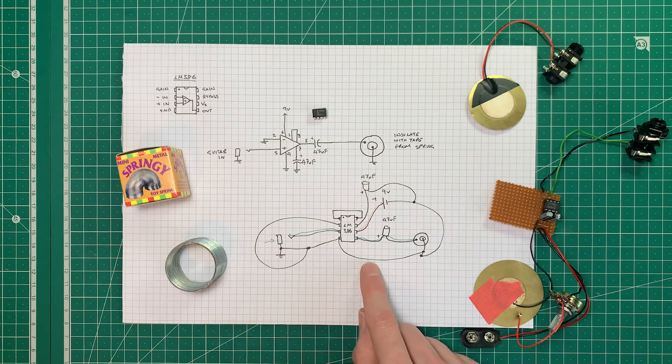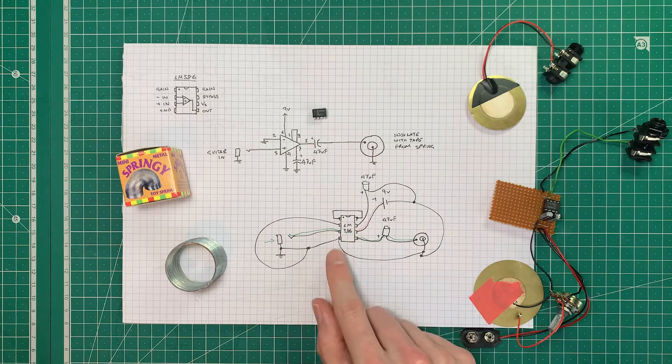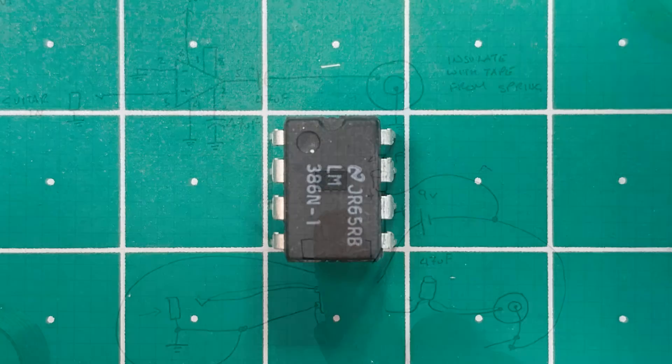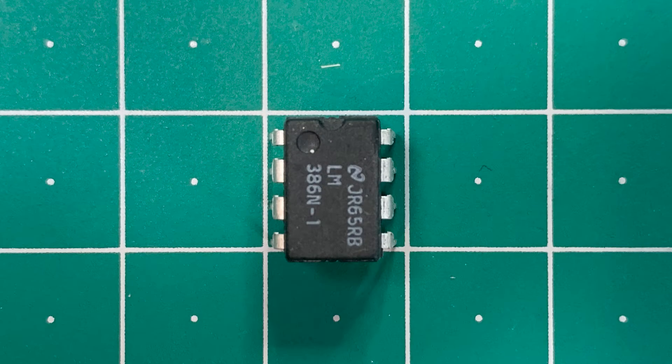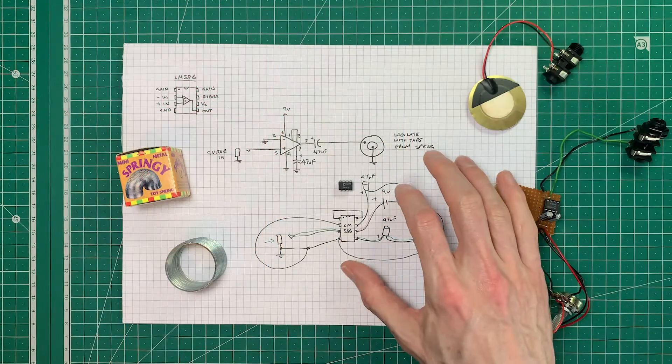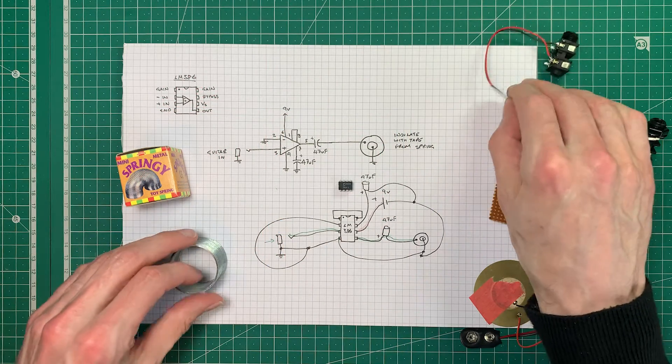So it really is a pretty simple circuit to follow. Another advantage of this is if you don't know the 386 chip already, it's definitely one that you should be aware of because it's used in some guitar effects pedals as well as to drive speakers to make mini amplifiers.